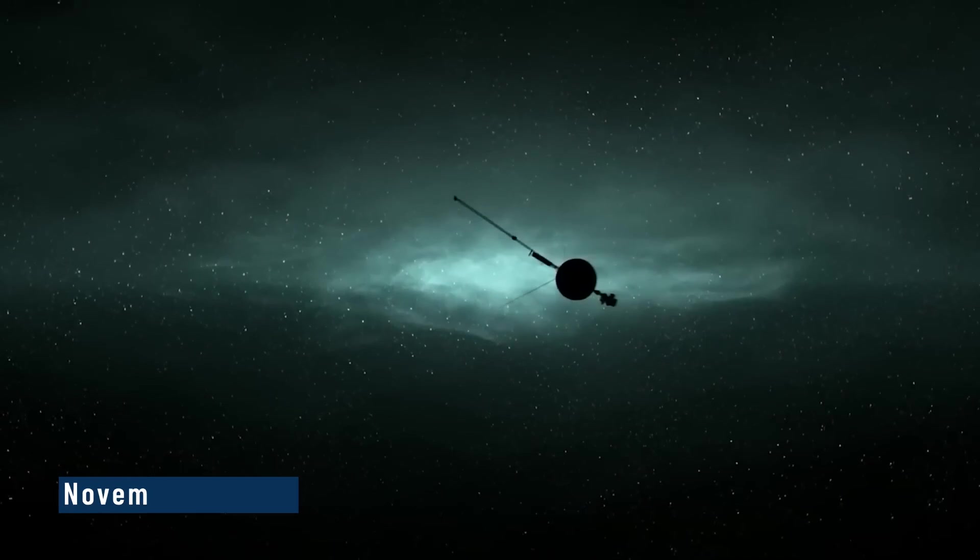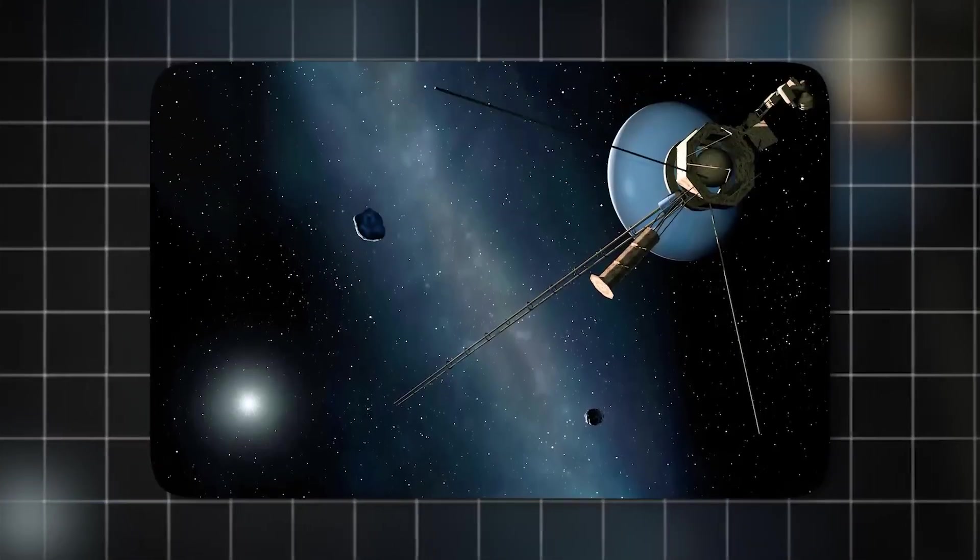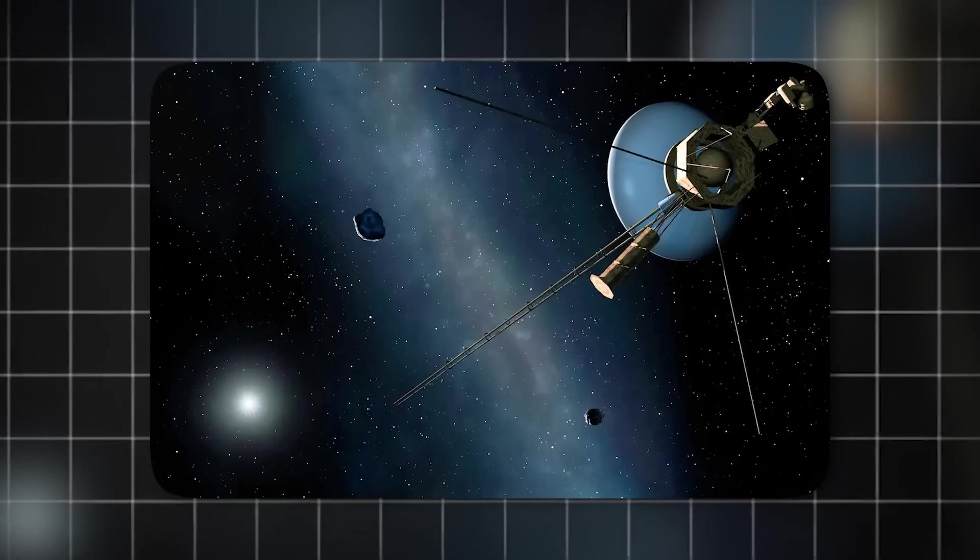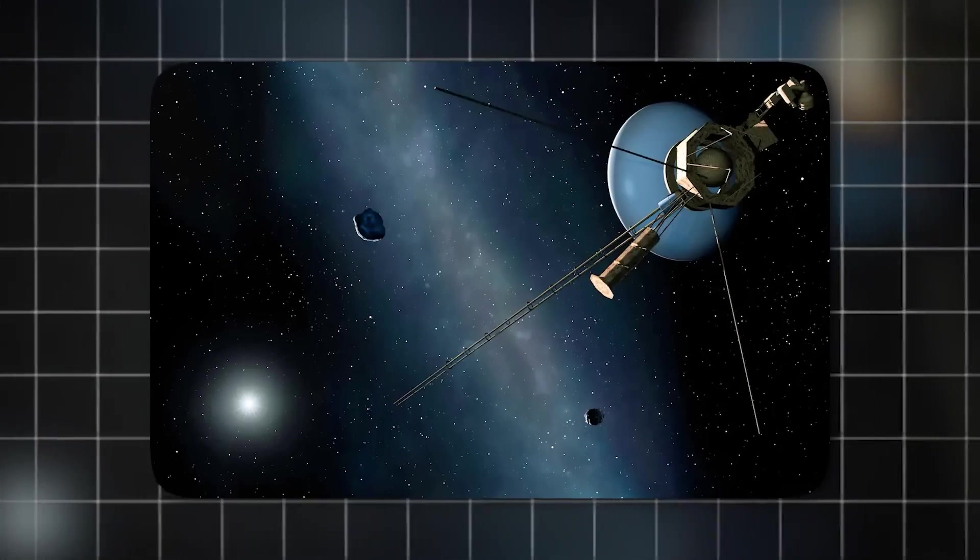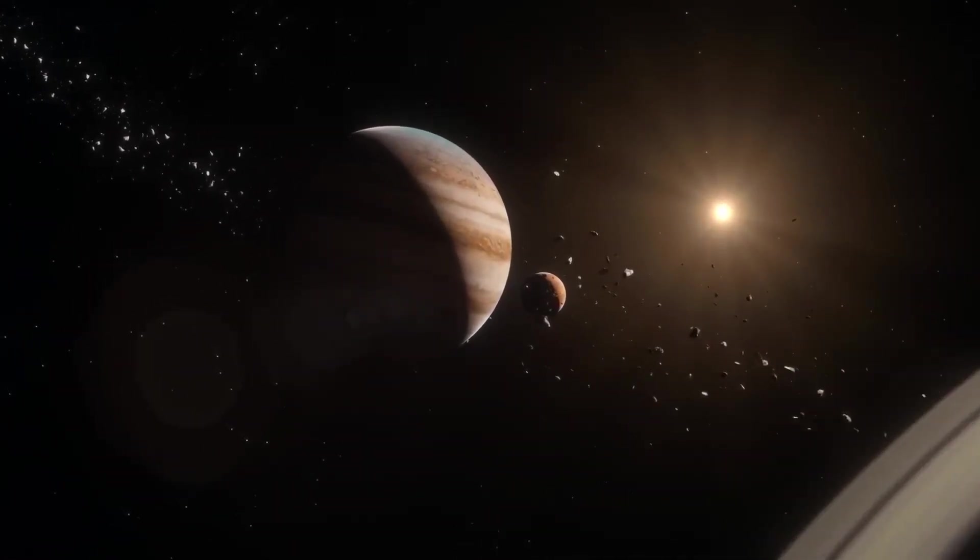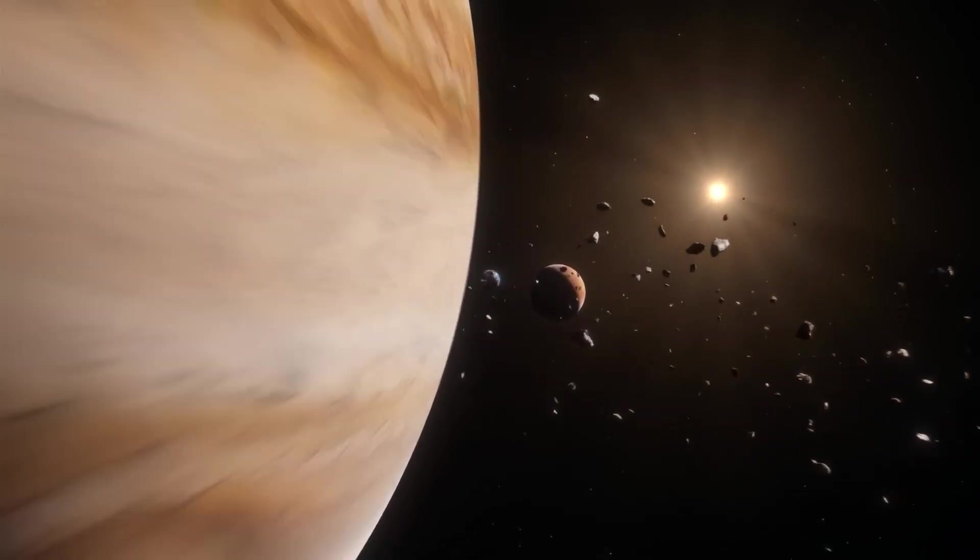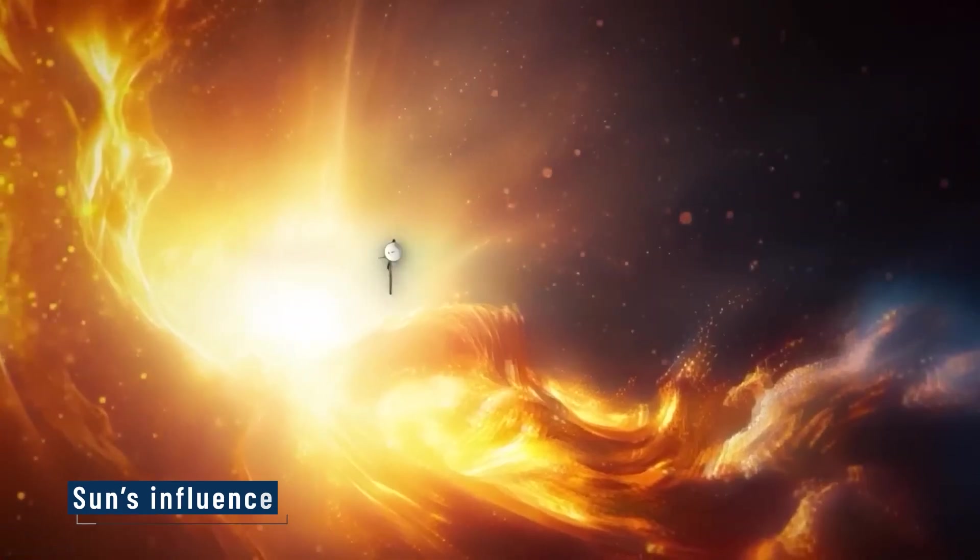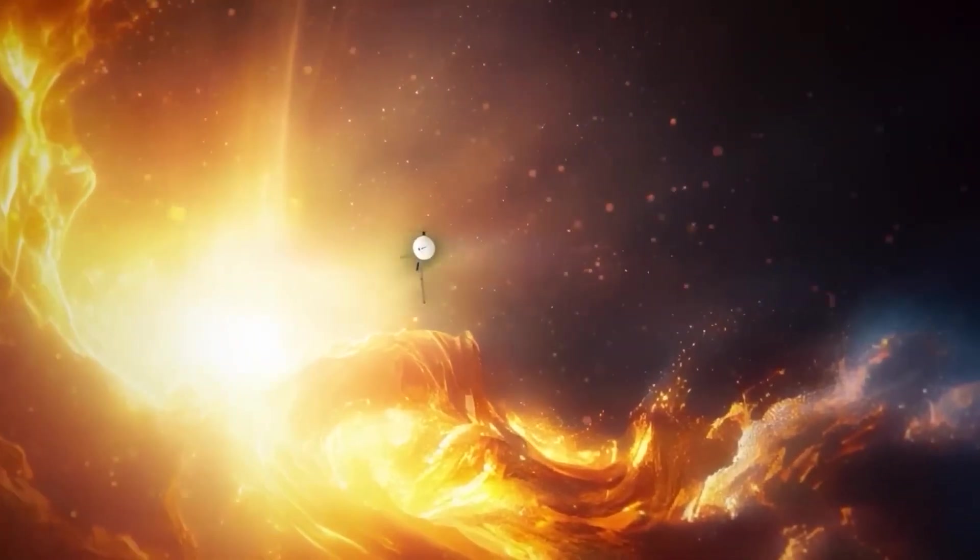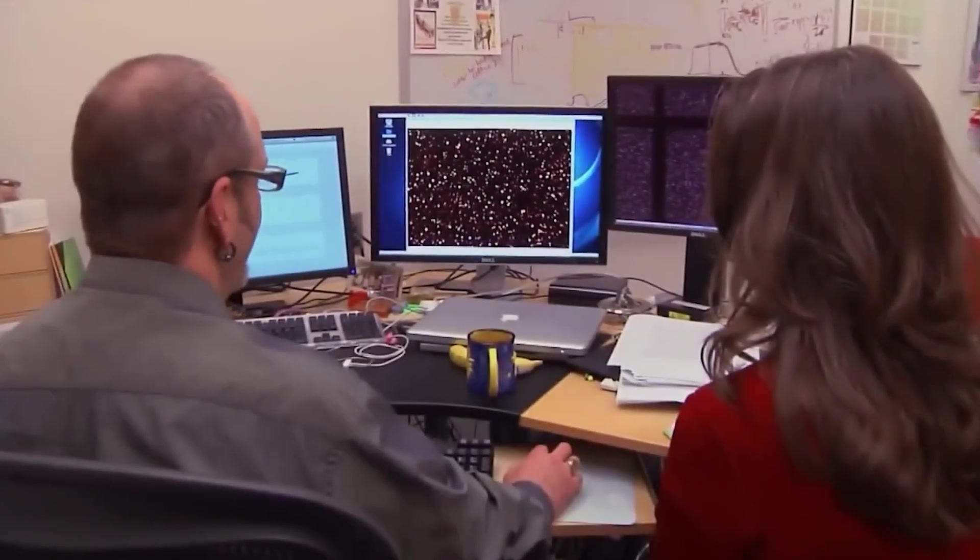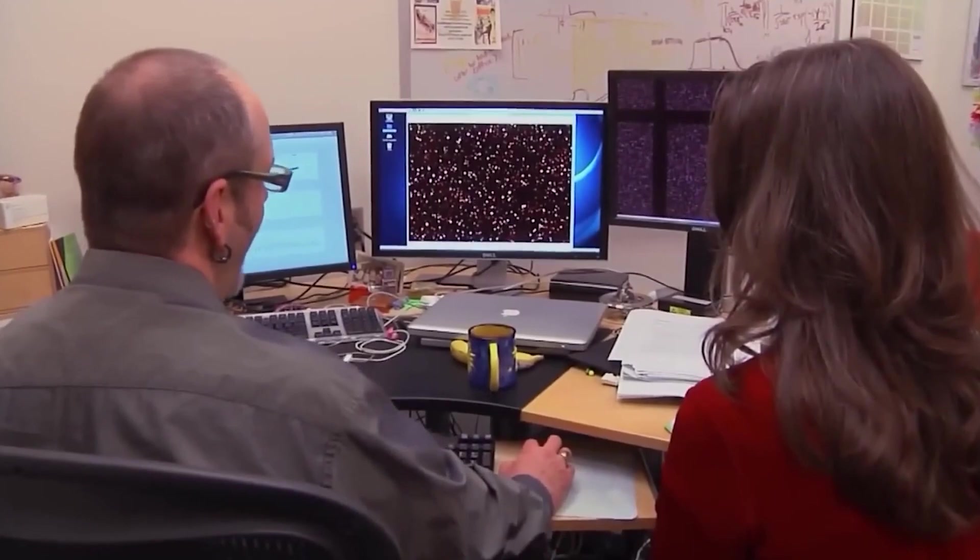On November 5th, 2018, Voyager 2 crossed the Heliopause, the boundary where the solar wind gives way to the interstellar medium. This moment marked humanity's first direct experience of deep space beyond the Sun's influence. Voyager 2 became an enduring symbol of human curiosity, persistence, and the desire to push beyond known limits.